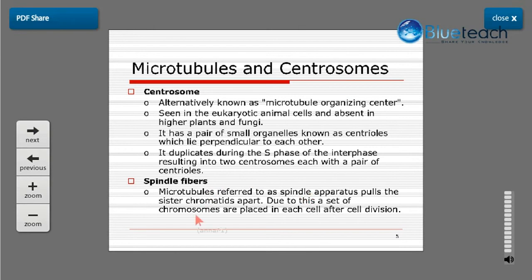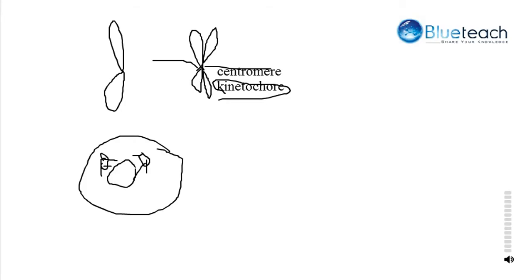Mitosis maintains the ploidy — the number of chromosomes. If the parent cell starts with four chromosomes, the two daughter cells will also each have four chromosomes. This happens because the microtubules pull apart the sister chromatids — one sister chromatid moves towards one daughter cell and the other moves into the other daughter cell.